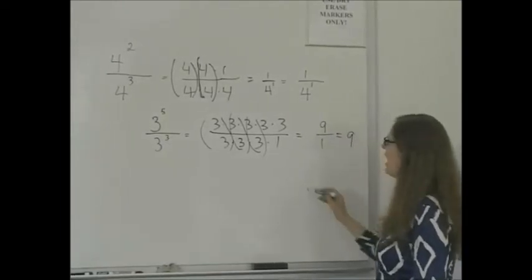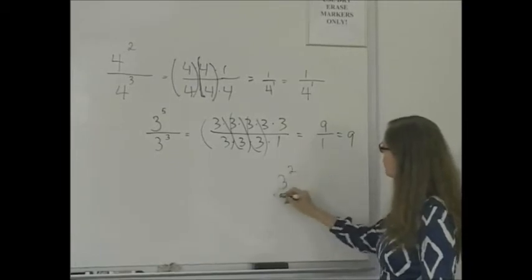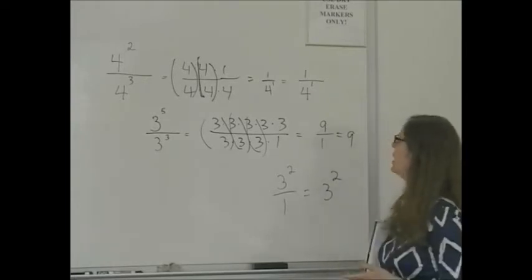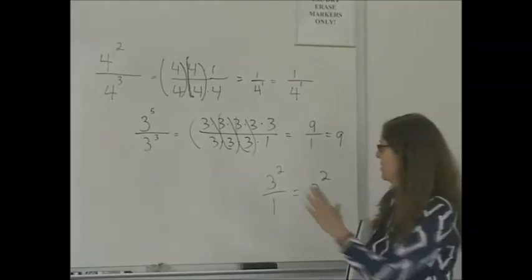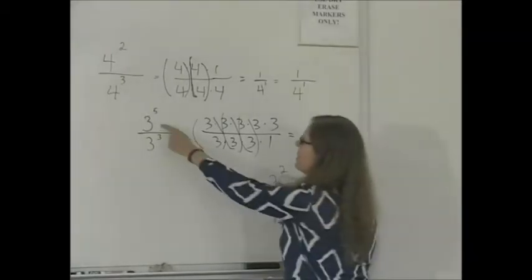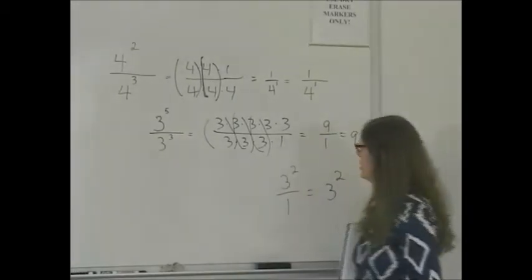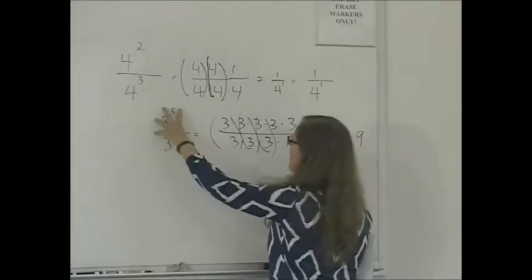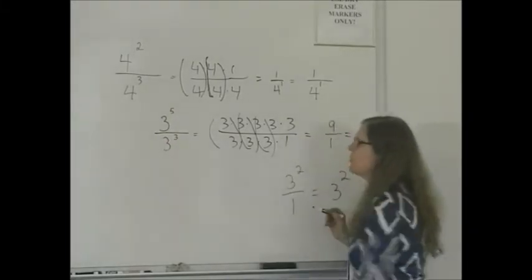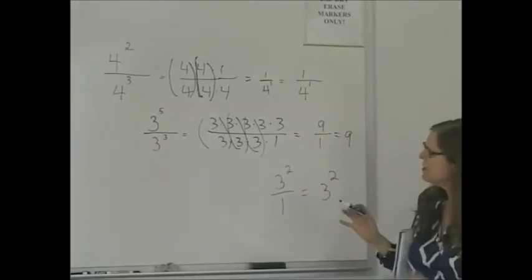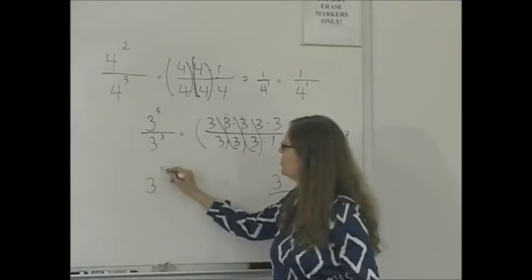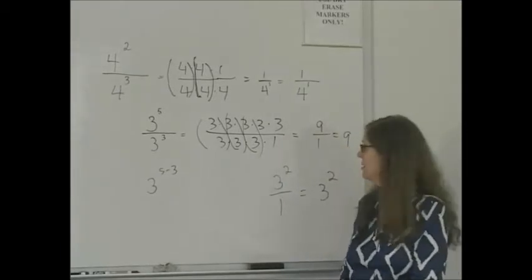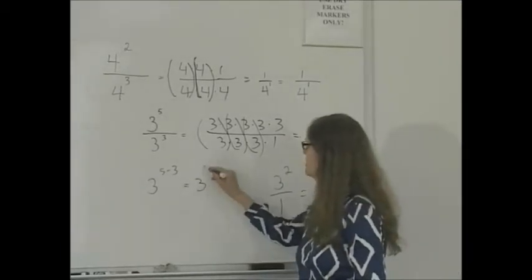That's 9, over 1, which is 9. Or I could have said 3 to the second power over 1, which is just 3 to the second power. Now let's take a look at the numerical relationship we've generated here. 3 to the fifth divided by 3 to the third turned out to be 3 to the second. If you notice, it's the same thing as 3 to the power you get when you say 5 minus 3, which is 2 — 3 to the second power.